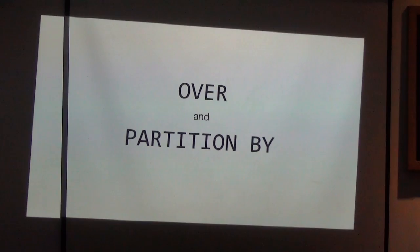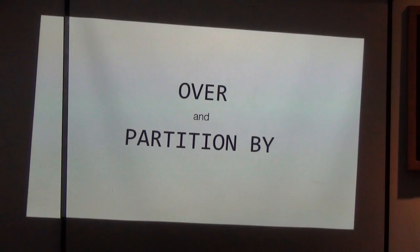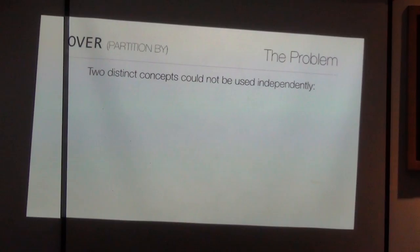Now coming to another big feature: the OVER clause. SQL 92 mixes two concepts that are actually not related. The first is merging rows that have some values in common — done with GROUP BY or DISTINCT. The other concept is aggregating data: MIN, MAX, AVG, SUM, and so on. The connection is that if you want to aggregate data, you also have to merge rows. And it turns out that this is a bad design choice.